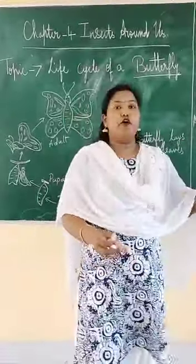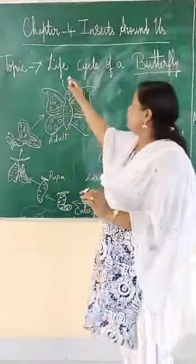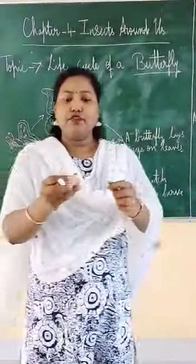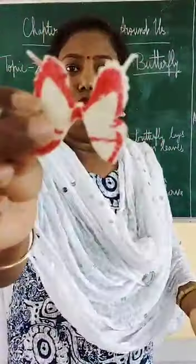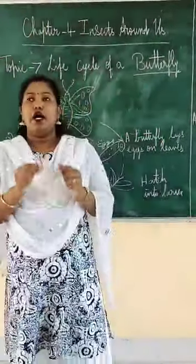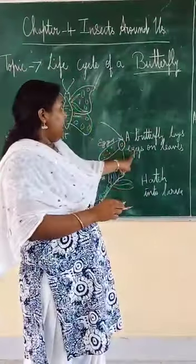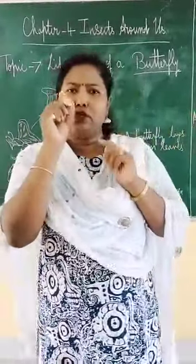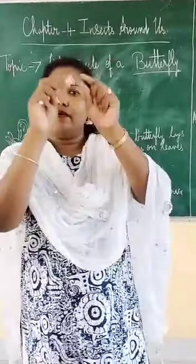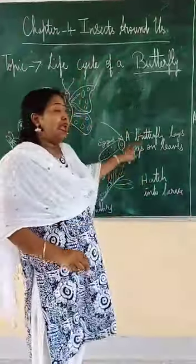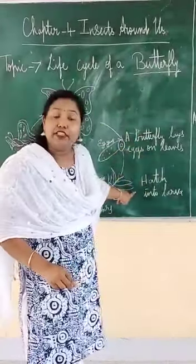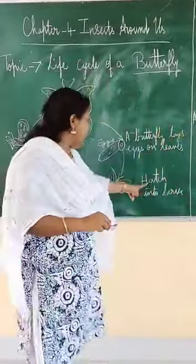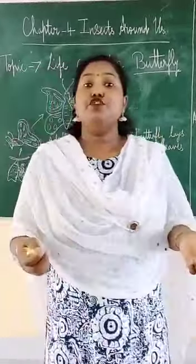Children, we have just learned about the body parts of an insect. Now we are going to learn about the life cycle of a butterfly. An adult butterfly lays eggs on leaves. When you go to the garden, you will look at the leaves and get tiny white dots. The butterfly lays eggs on the leaves, and then these eggs hatch into larva.